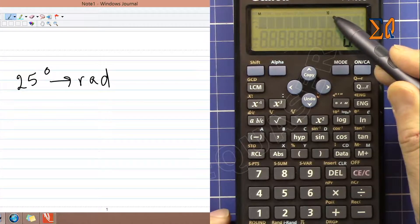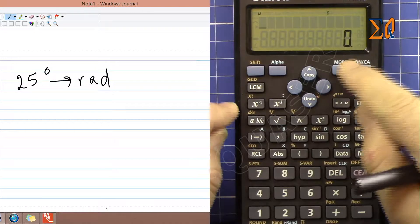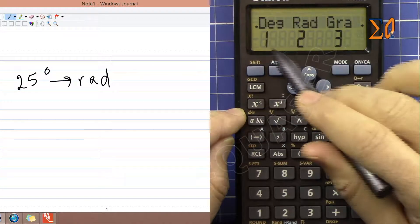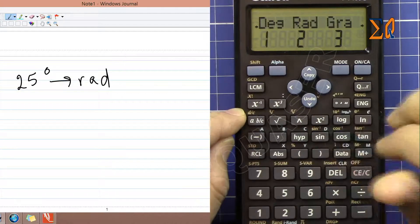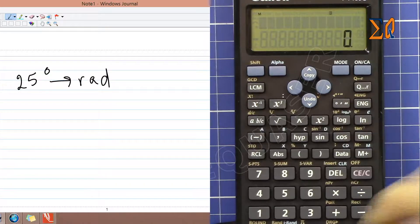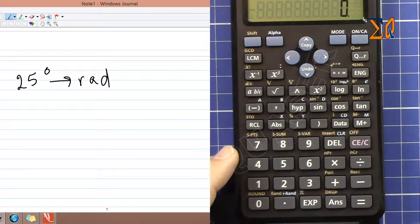To change that, press Mode, and then make sure to put it in radian - that's option 2. Now we see 'R' here indicating radian mode. Then enter 25 to get that degree symbol.